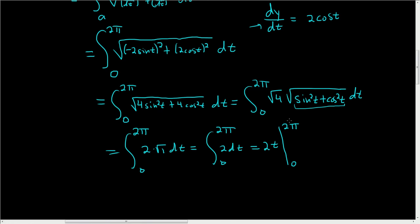So in this case, you plug in the 2π first, so you get 2 times 2π minus 2 times 0. So you end up with an arc length of 4π.